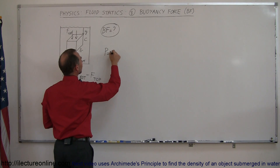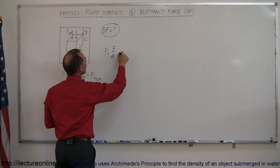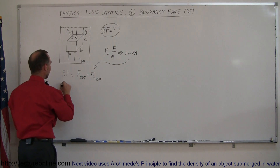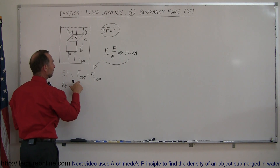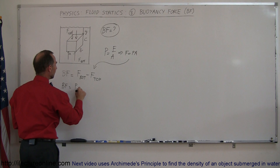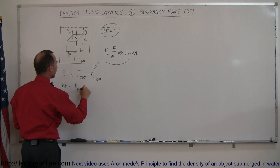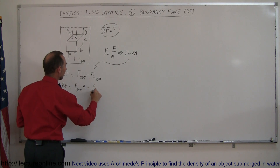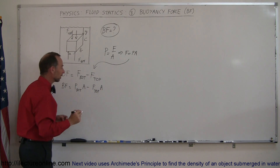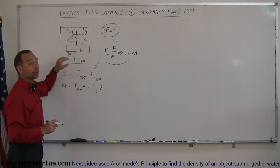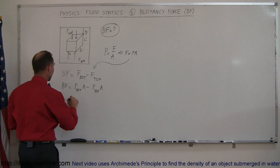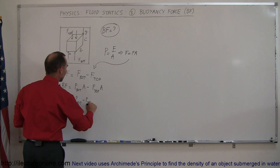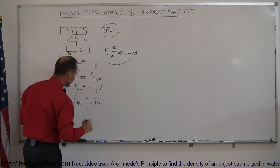Since the pressure equals force divided by area, the force equals pressure times area. We can plug that in and write that the buoyancy force equals the force at the bottom, which is the pressure at the bottom times the cross-sectional area, minus the force at the top, which is the pressure at the top times the cross-sectional area. Since the area is the same for both, this simplifies to the pressure at the bottom minus the pressure at the top, times the cross-sectional area.